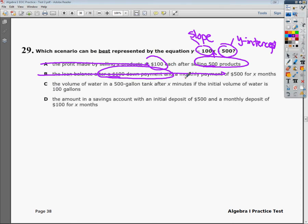C says the volume of water in a 500 gallon tank after x minutes if the initial volume of water is 100 gallons. Once again, initial volume is 100 gallons. We know that our starting off point is 500, so C can't be it. So it's very likely that the answer to number 29 is D.